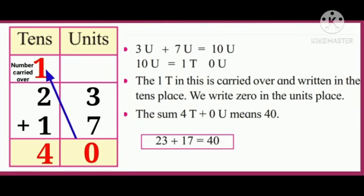We write 0 in the units place. In the tens place, 1 plus 2 plus 1 is equal to 4. So the sum, 4 tens plus 0 units means 40. The answer will be 23 plus 17 is equal to 40. I hope you understand all examples. Thank you.